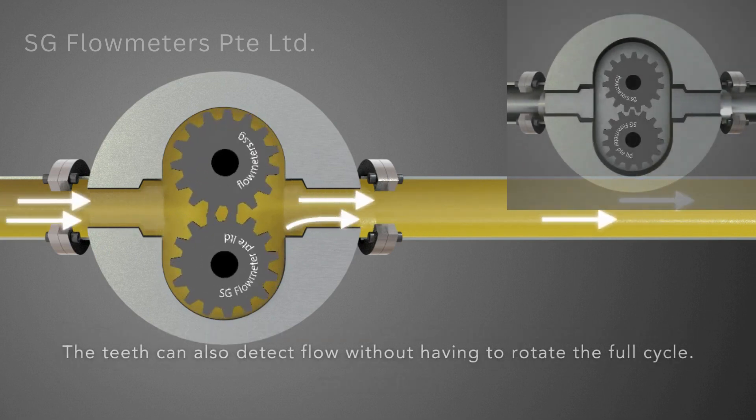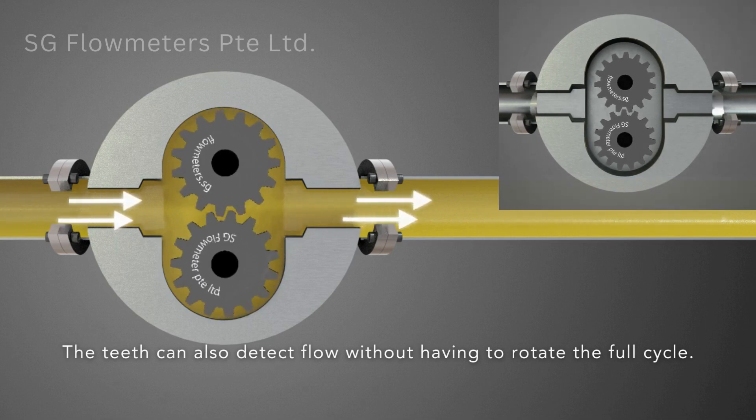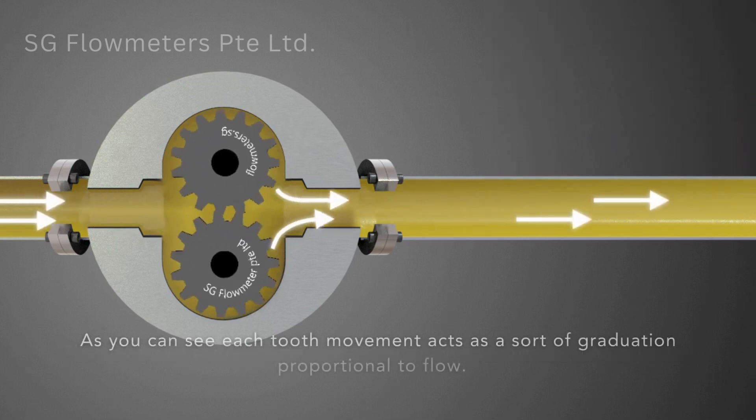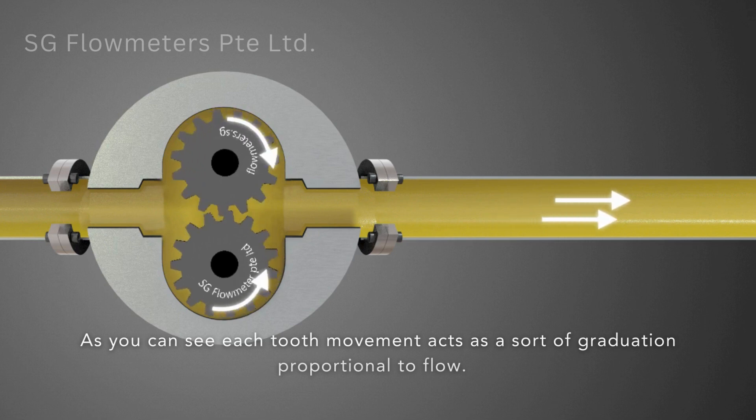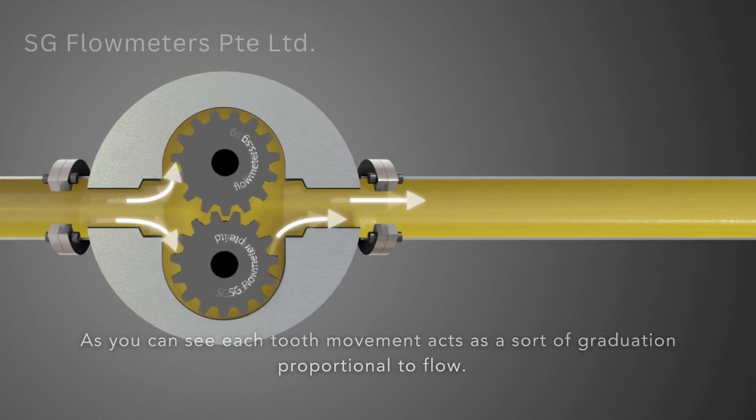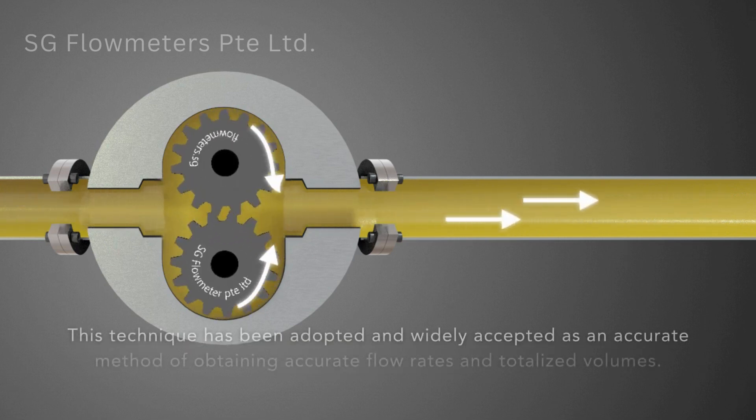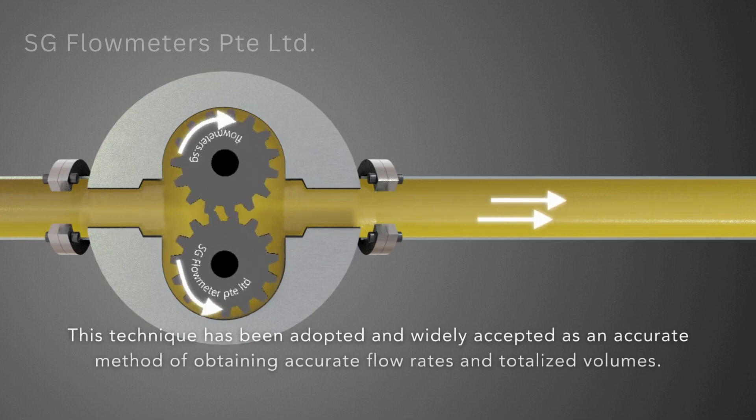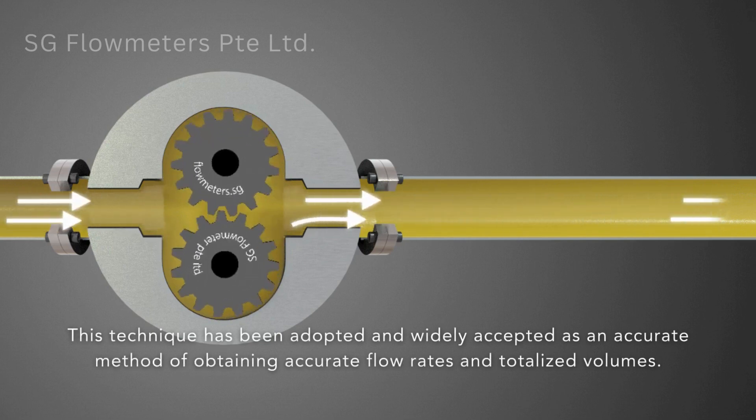The teeth can also detect flow without having to rotate the full cycle. As you can see, each tooth movement acts as a sort of graduation proportional to flow. This technique has been adopted and widely accepted as an accurate method of obtaining accurate flow rates and totalized volumes.